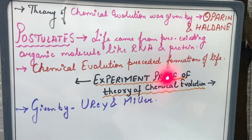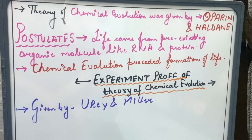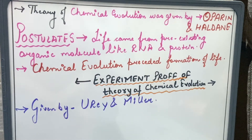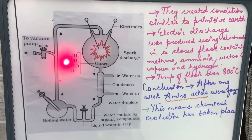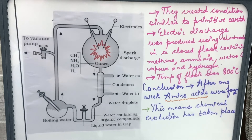The theory of abiogenesis was proved by Urey and Miller through their experiment. Note: in the NCERT it is written only Urey, but the scientists were Urey and Miller. They took a glass container with four gases — methane, ammonia, water vapor, and hydrogen — and electrodes inside it that produced an electric current, raising the temperature up to 800 degrees Celsius.